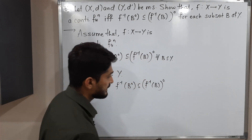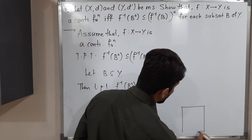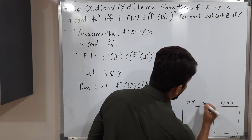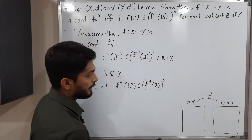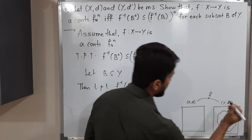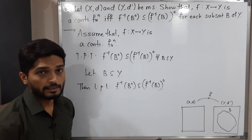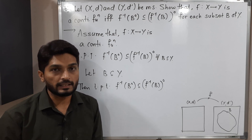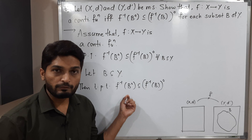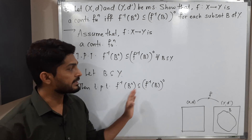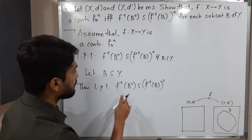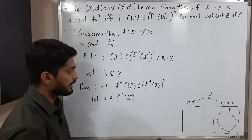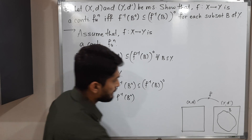Let us draw the diagram simultaneously so the concept will be clear. We have metric space (X,d) and another metric space (Y,d'). We have a function f from X to Y. We are considering any subset B of Y, and for that set B we have to prove this relation — the first set is a subset of the second. To prove a subset relation, we take any arbitrary point from the first set and prove it belongs to the second. So let a belong to f⁻¹(B°).